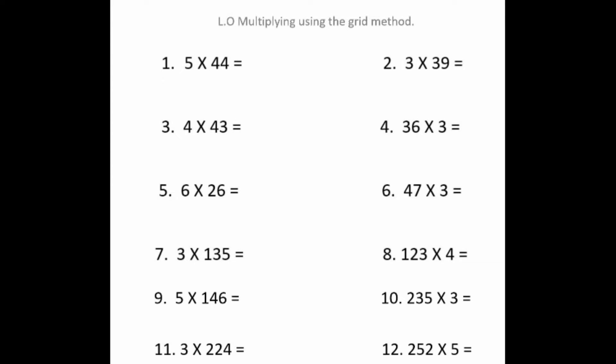Write the LO in your book and the short date. The LO is multiplying using the grid method. Then pause the video and work your way through the sums. When you have completed it, press play again and get a coloured pencil and we'll mark them together. I have placed an online game for you to do in the abacus if you have finished with time to spare.